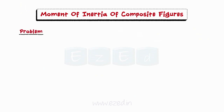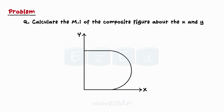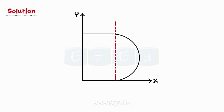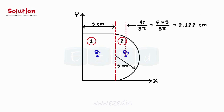Consider the following problem: Calculate the moment of inertia of the composite figure about the X and Y axes. We can divide the composite figure into two parts — Part 1: rectangle, and Part 2: semicircle. We will now mark the centroids of both the rectangle and the semicircle. The centroid of the semicircle will be at a distance of 4r / 3π from the side of the rectangle.